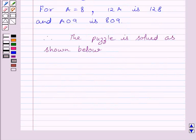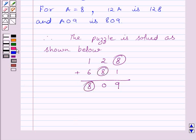We can solve the puzzle as 128 plus 681 gives 809. And we get value of A is equal to 8 and value of B is equal to 1.